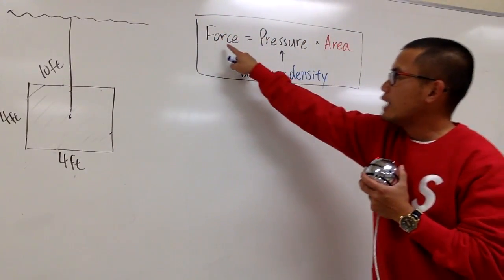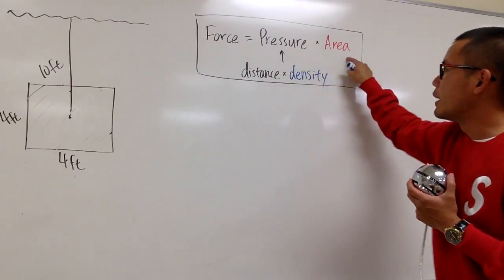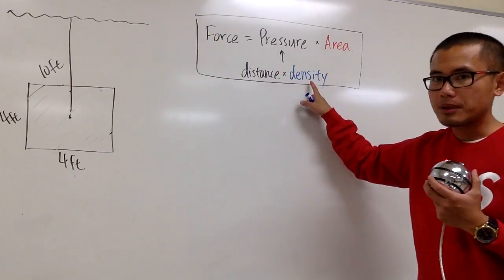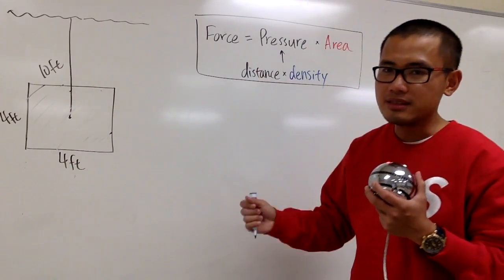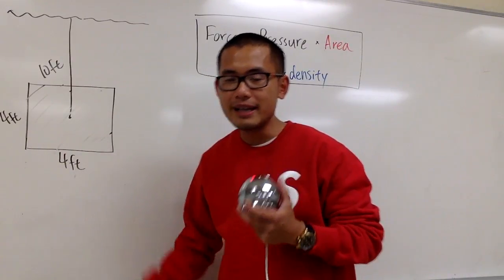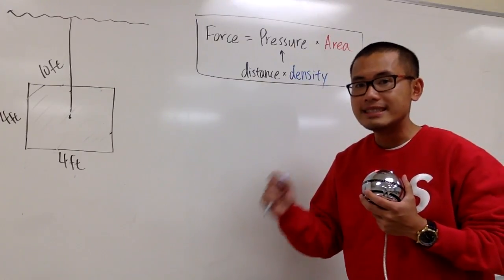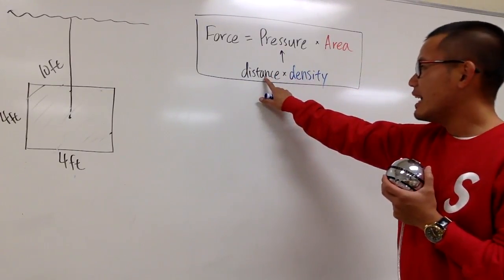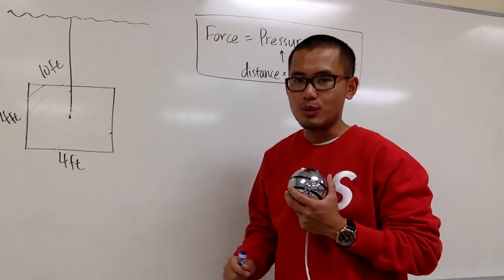Let's review real quick. The hydrostatic force is equal to pressure times area. For pressure, we care about two things: first, the density — we're talking about water, so it will be the density of water. Because we're using feet, that's a US unit, so the water density will be 62.5 in this book.